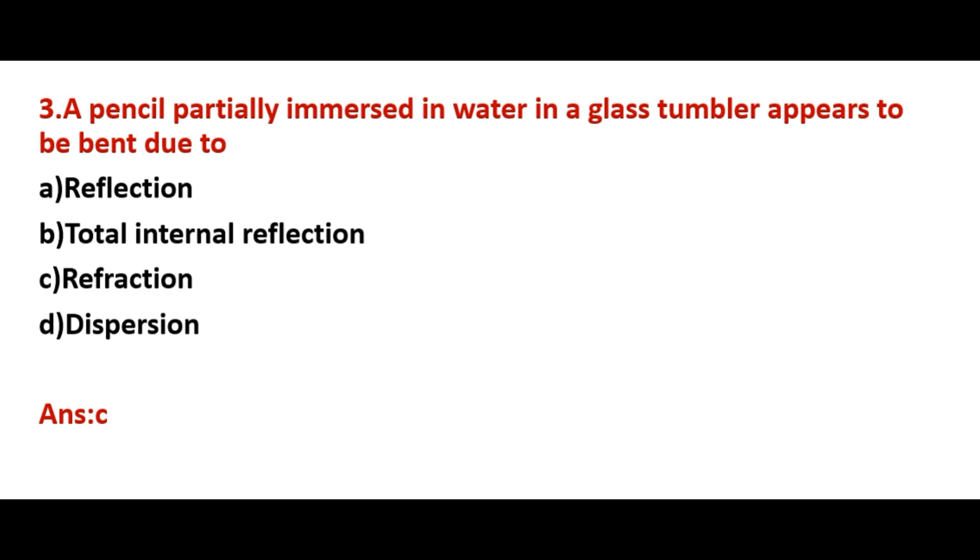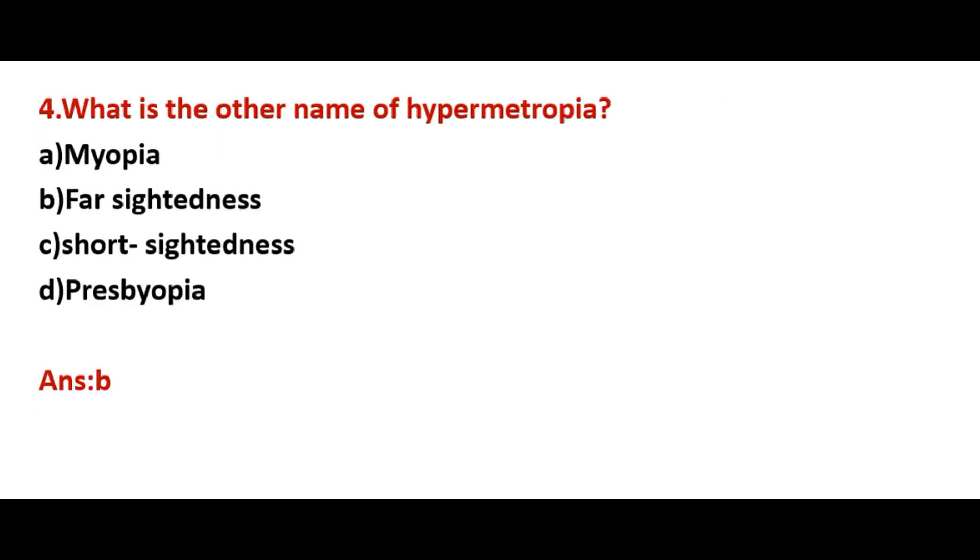Fourth one: What is the other name of hypermetropia? Answer is B, the other name of hypermetropia is far-sightedness. Option A, myopia, and option C are the same. The other name of myopia is short-sightedness.